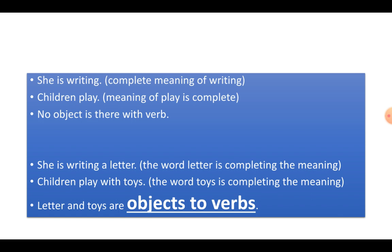Children play. What do they play? How do they play? I am not concerned. I just know children play. So, there is no object with the verbs. What is the verb in the first sentence? She is writing. Writing is the verb but there is no object. What is she writing? Where is she writing? How is she writing? I don't know.